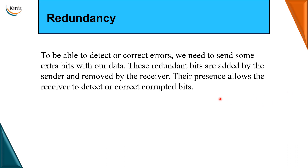Before learning about error detection and correction mechanisms, a very important term we need to understand is redundancy. Redundancy generally means duplication, but here it refers to extra bits that we temporarily use alongside our data. These extra bits help the receiver identify whether an error has occurred or not — that is called redundancy here.